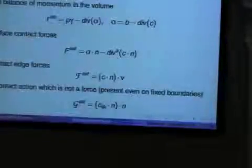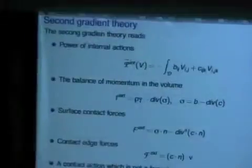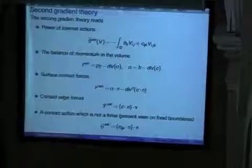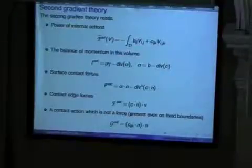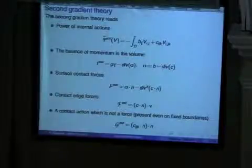I just showed you two ways of obtaining this equation, which I call the second gradient theory. These are the equations. You recognize the classical theory with sigma, and you have extra terms which involve the third order tensor C. So this C appears in the power of internal forces, in the density of surface forces, in the contact edges, and in the extra boundary conditions. If you put C equal to zero here, you recover the classical theory of Cauchy.